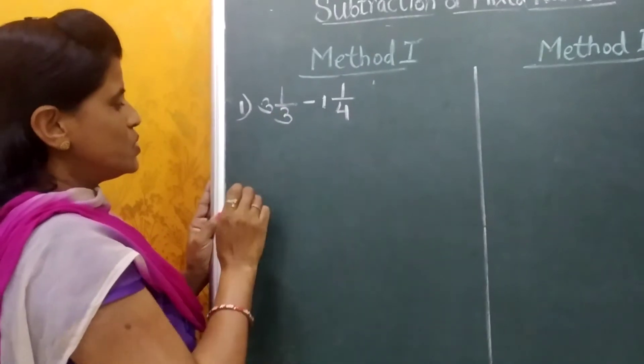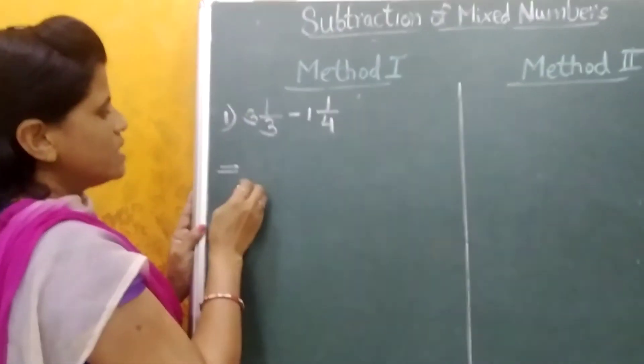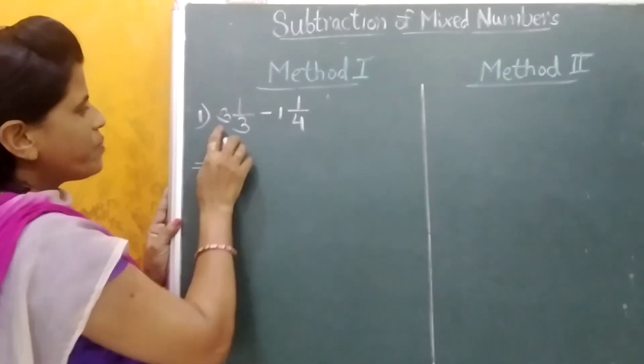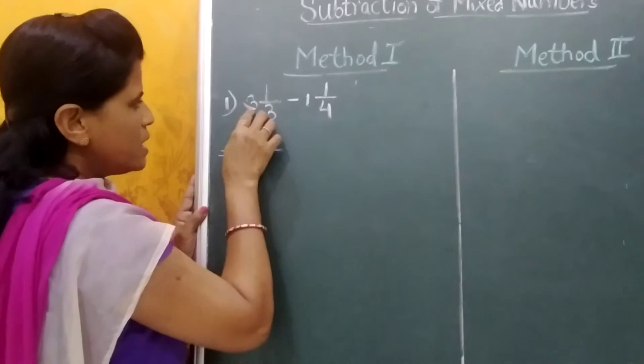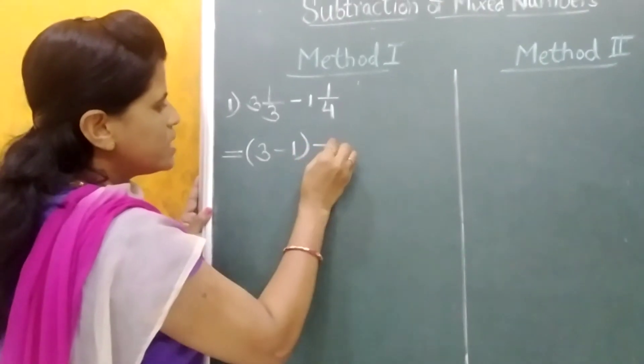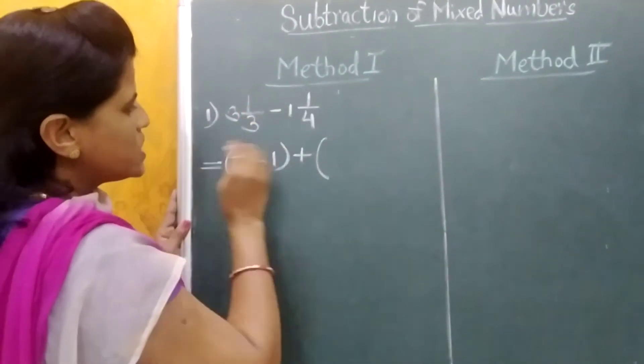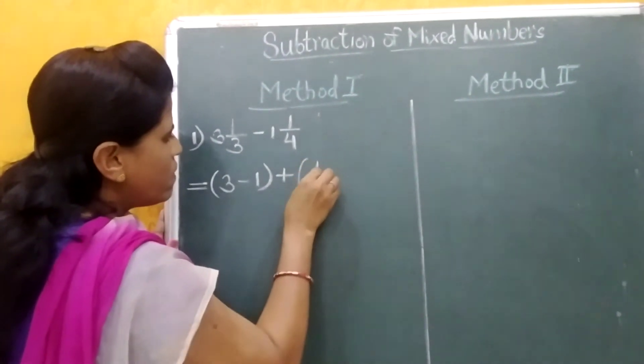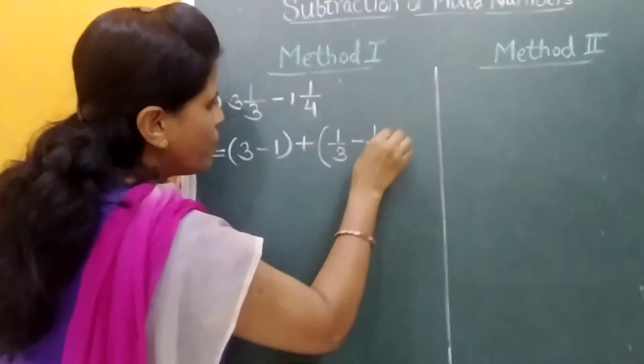Now we have to do the subtraction. So let's see the first method. In this method, we will take the whole number to one side. 3 minus 1 in one bracket plus the other bracket for the fractions, 1 upon 3 minus 1 upon 4.